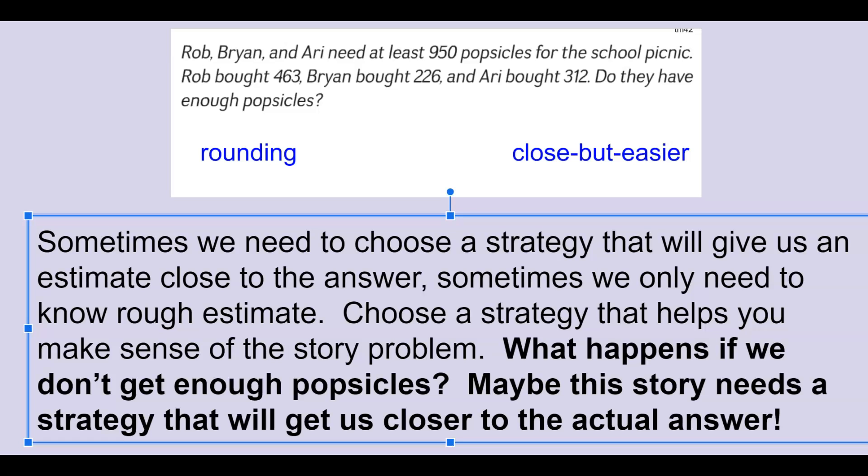What happens in this story if we don't get enough popsicles? Maybe this is a story that needs a strategy that will get us closer to the actual answer.